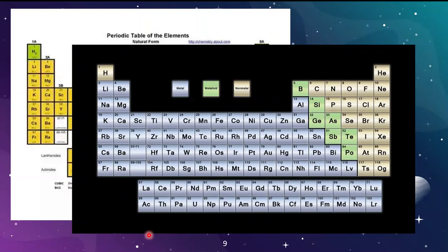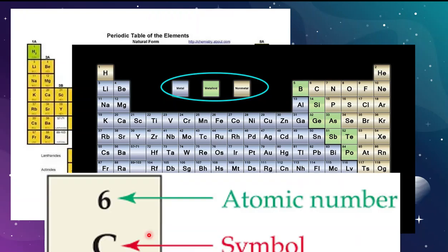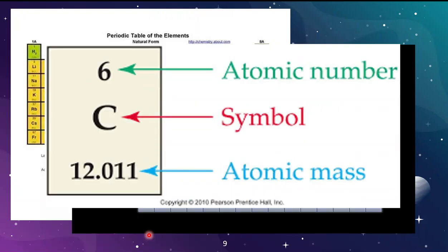Another version of this periodic table shows classification by region of the elements. The color coding shows the difference between metals, metalloids, and nonmetals. Each element block shows the symbol, the atomic number, and the atomic mass. We're going to focus on the mass for our purposes today.